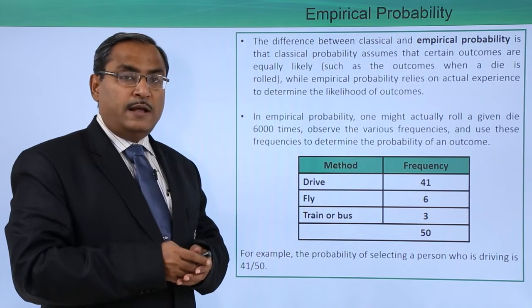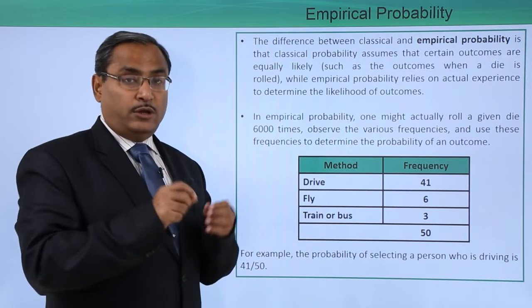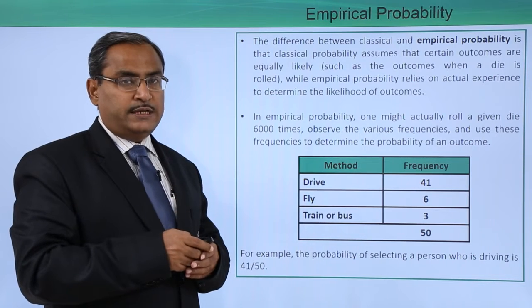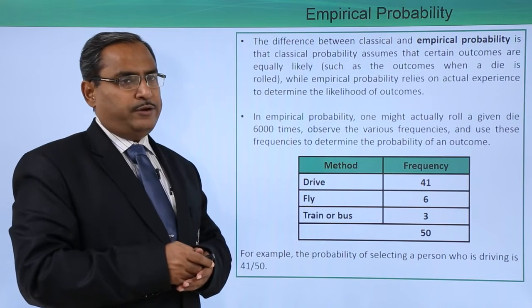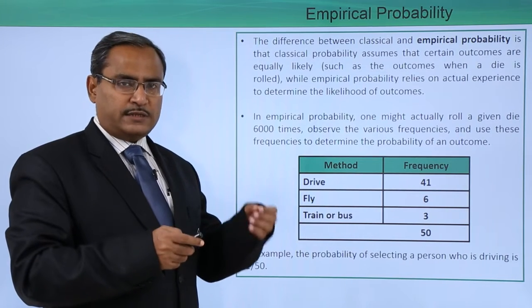For each and every face value, that is 1, 2, 3, 4, 5, 6, it will go on counting the number of frequencies, and from there it will try to calculate the frequency or the probability of occurrence of a certain event.